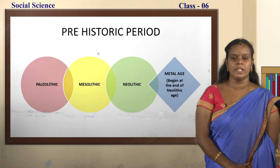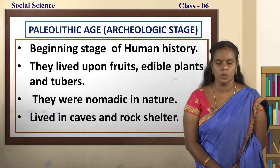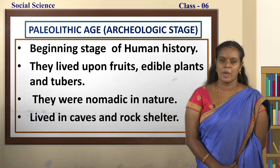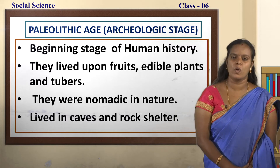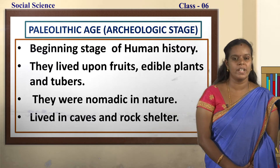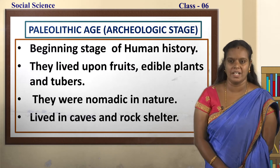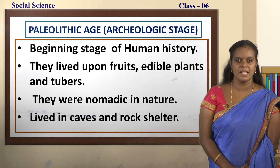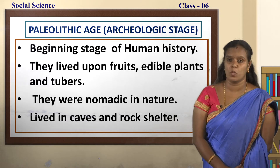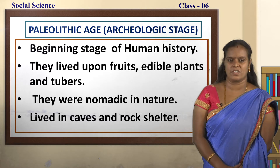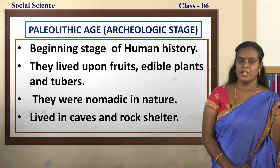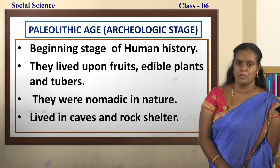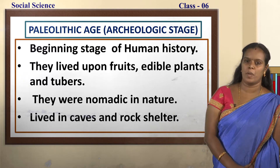Let us study about Paleolithic age. Paleo means old and lithic means stone — the old stone age is also called as Paleolithic age. This stage is also called as the archaeological stage. Archaeology is a scientific study of the remains of monuments like pots, jewels, etc. As there are no written records for this period, scientists make a study on the monuments or remains available.